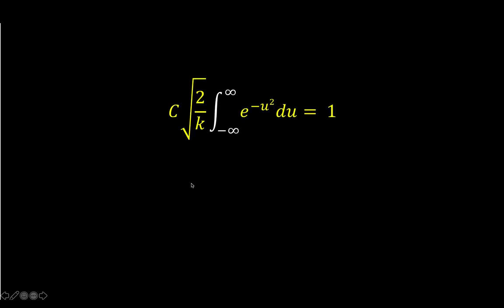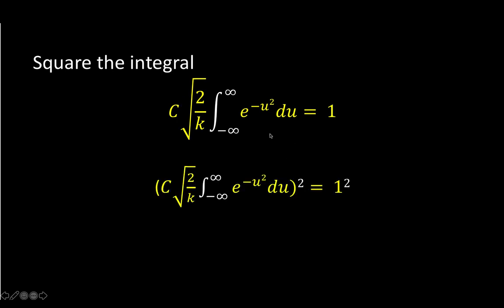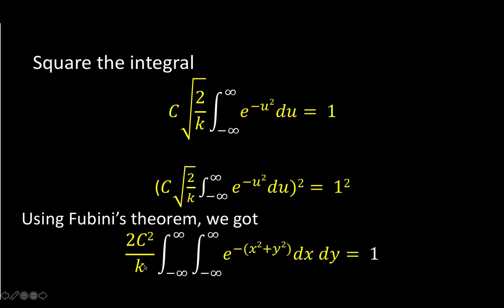This kind of integral is also called the Gaussian integral, named after Carl Gauss. The technique to simplify it is to square the integral, using what we call Fubini's theorem. Squaring the left side and the right side, squaring this integral results in a double integral. We square C to get C squared, square the square root of 2 over k to get 2 over k, and replace the exponent negative u squared with negative quantity x squared plus y squared. Since we are multiplying two integrals, we now have two differentials.